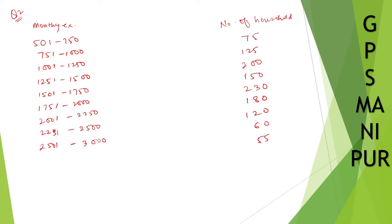Now you can see here 501 to 750 and the next one begins at 751. So here is 750, here is 751. This is called a discontinuous class. We need to make it into a continuous class.